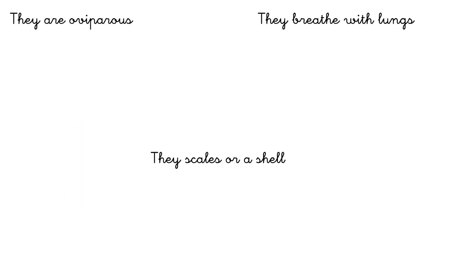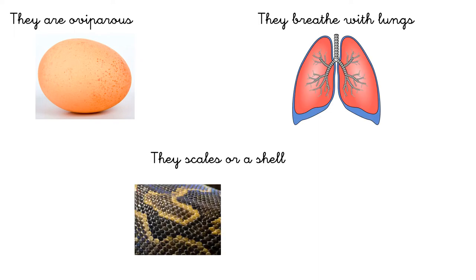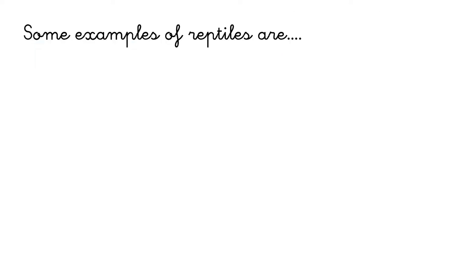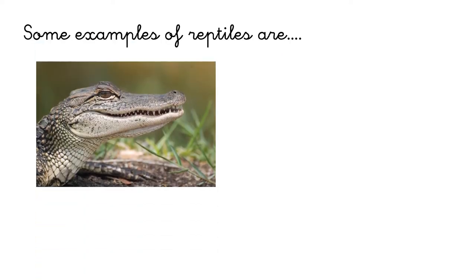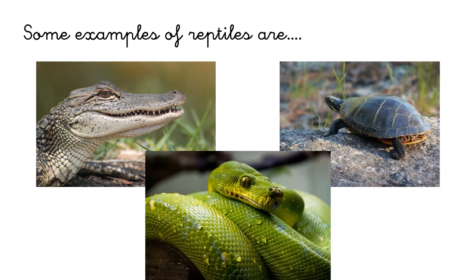Reptiles are oviparous. They are born from an egg. They breathe with lungs, and they have scales or a shell. Some examples of reptiles are the crocodile, the tortoise, and the snake.